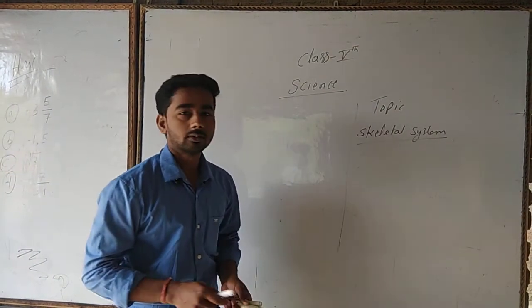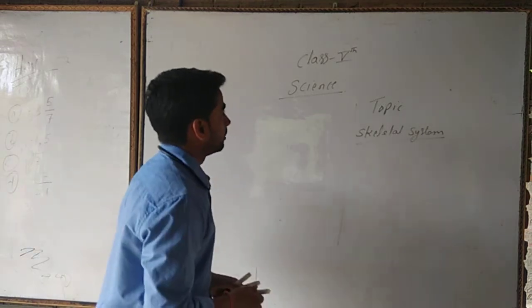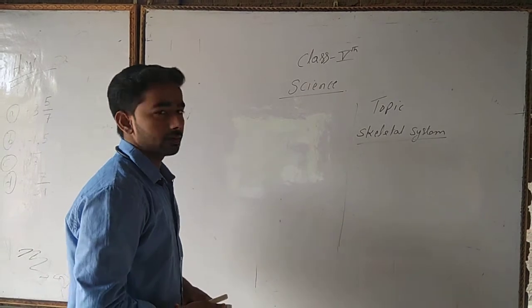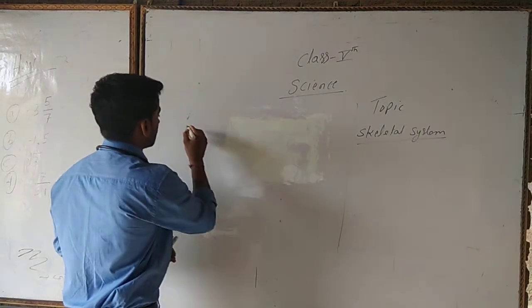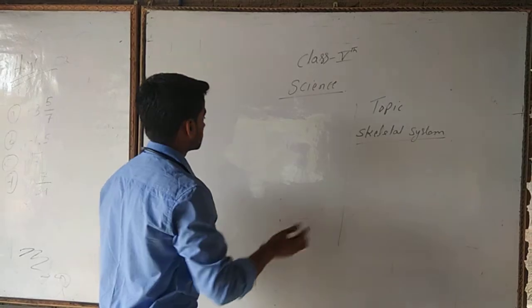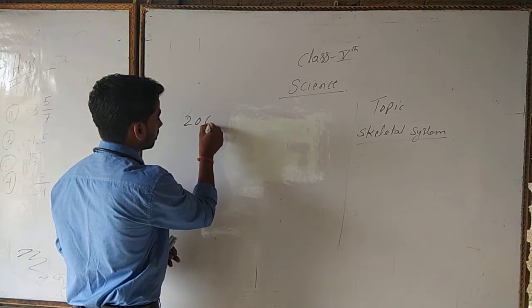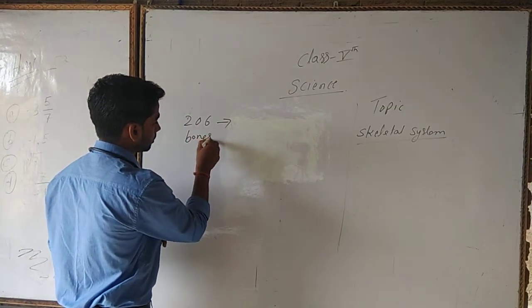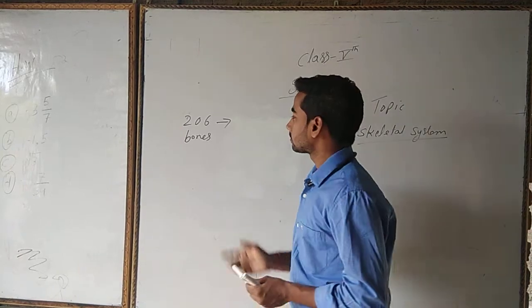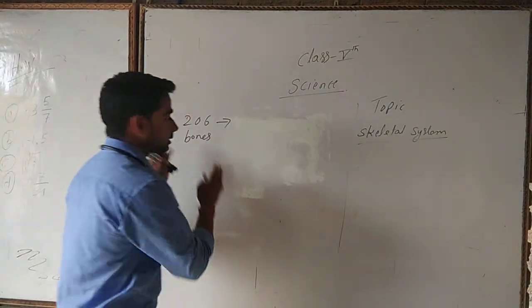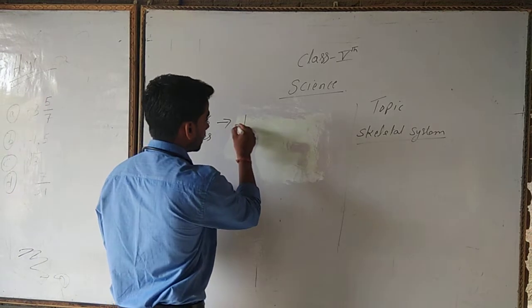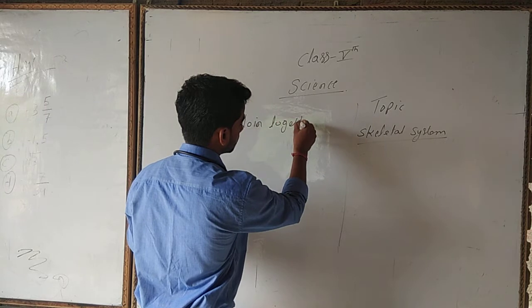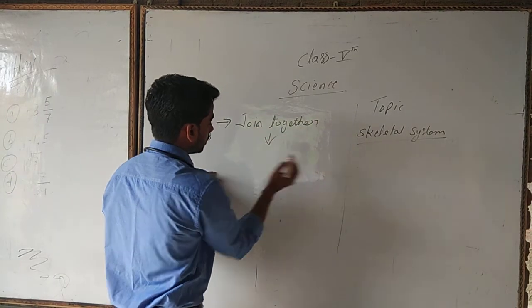Good morning students, today we shall learn about the skeletal system for class 5 science. First of all, I am going to define the skeletal system. As we already know, in our body there are a total of 206 bones.